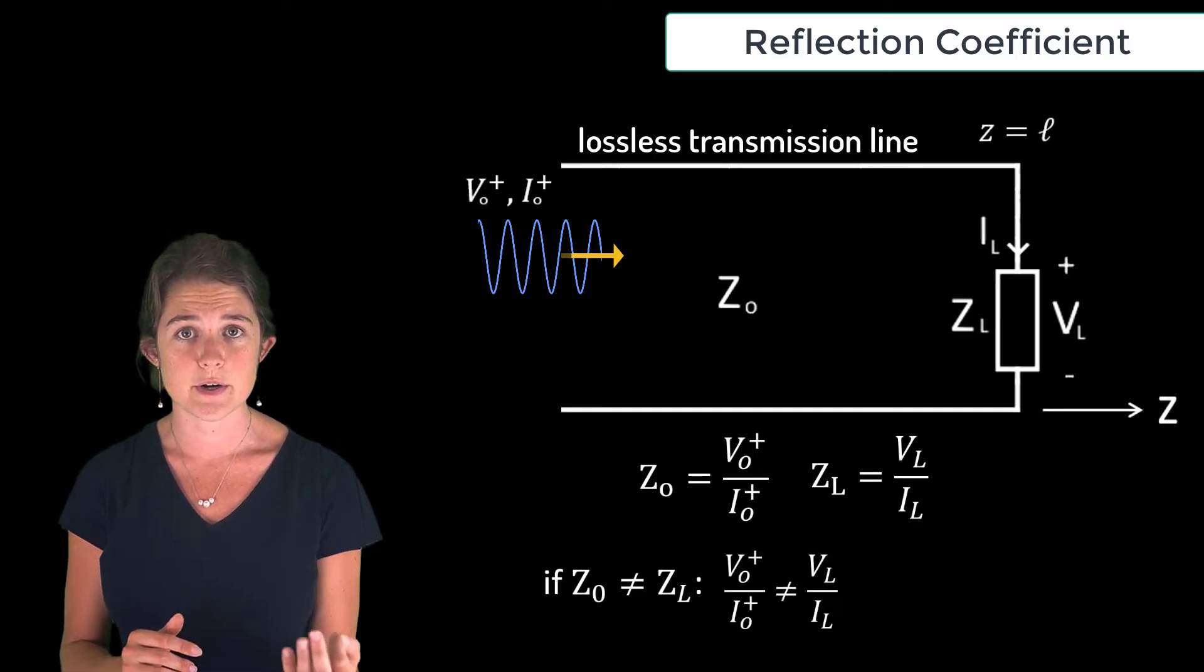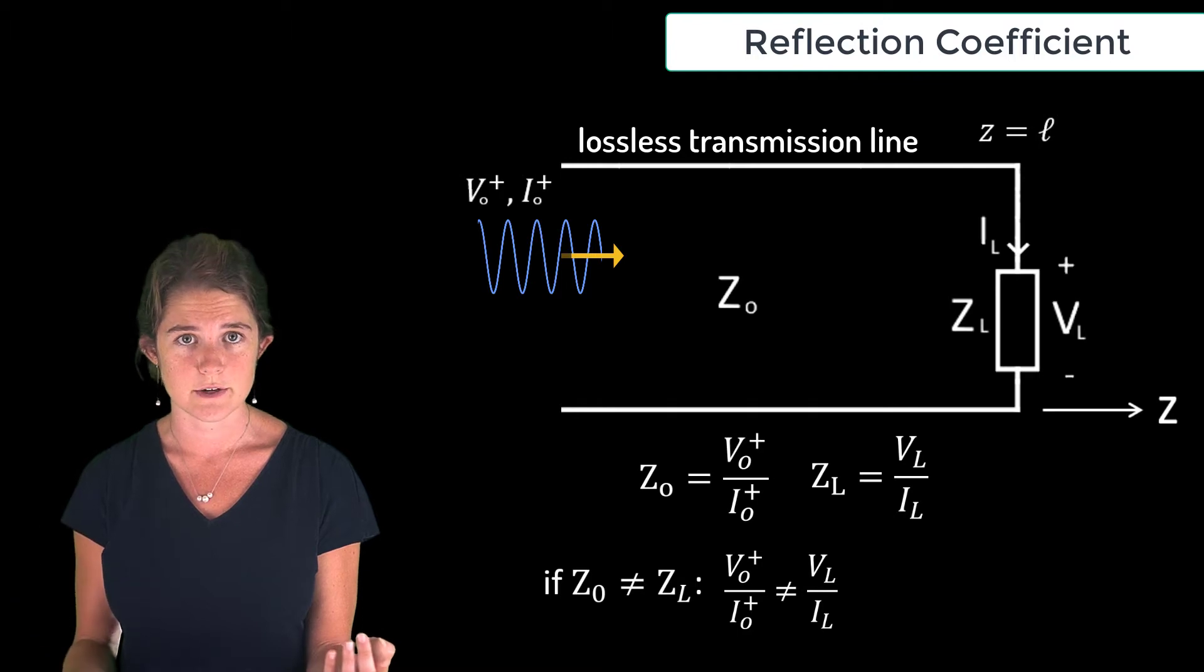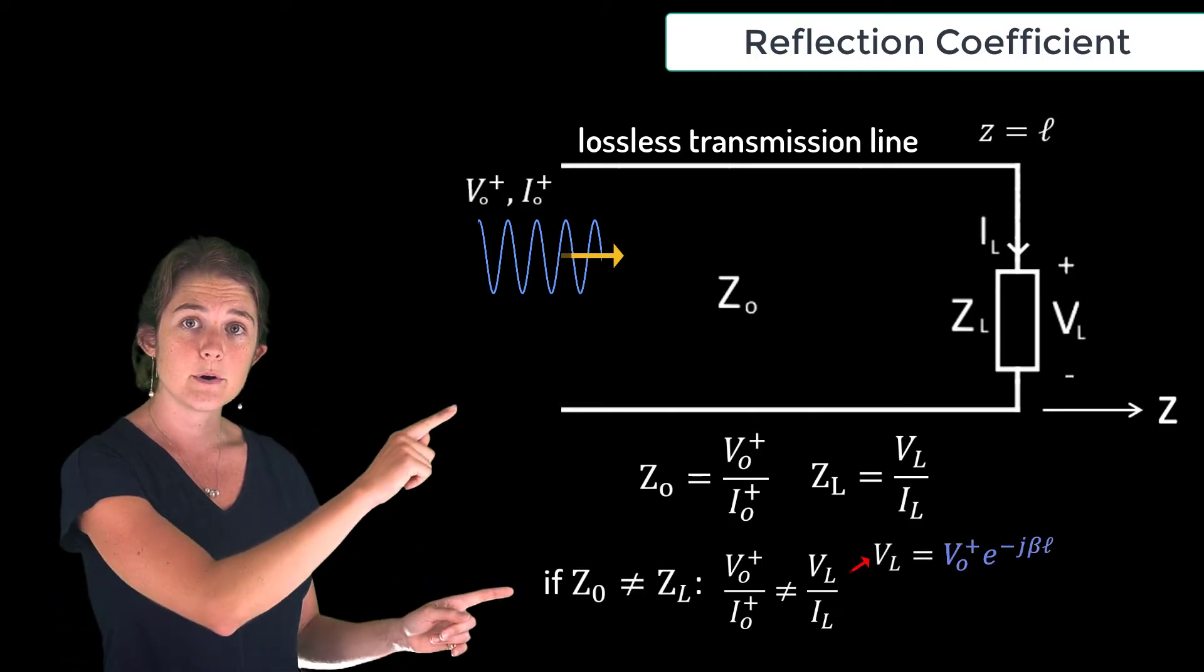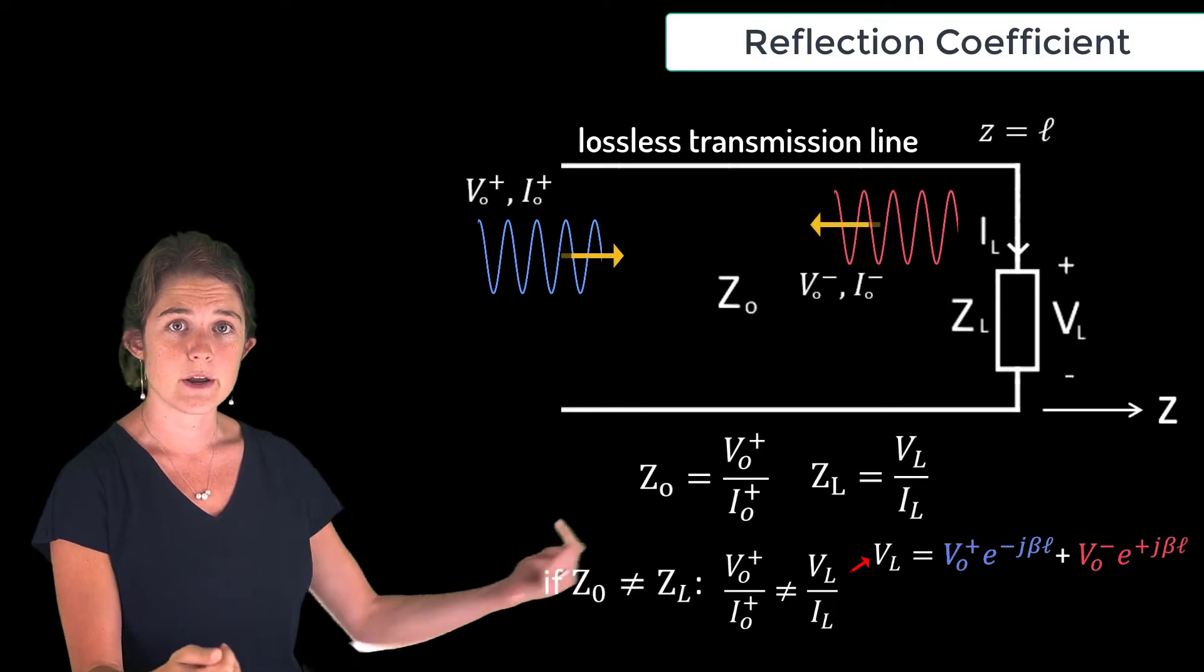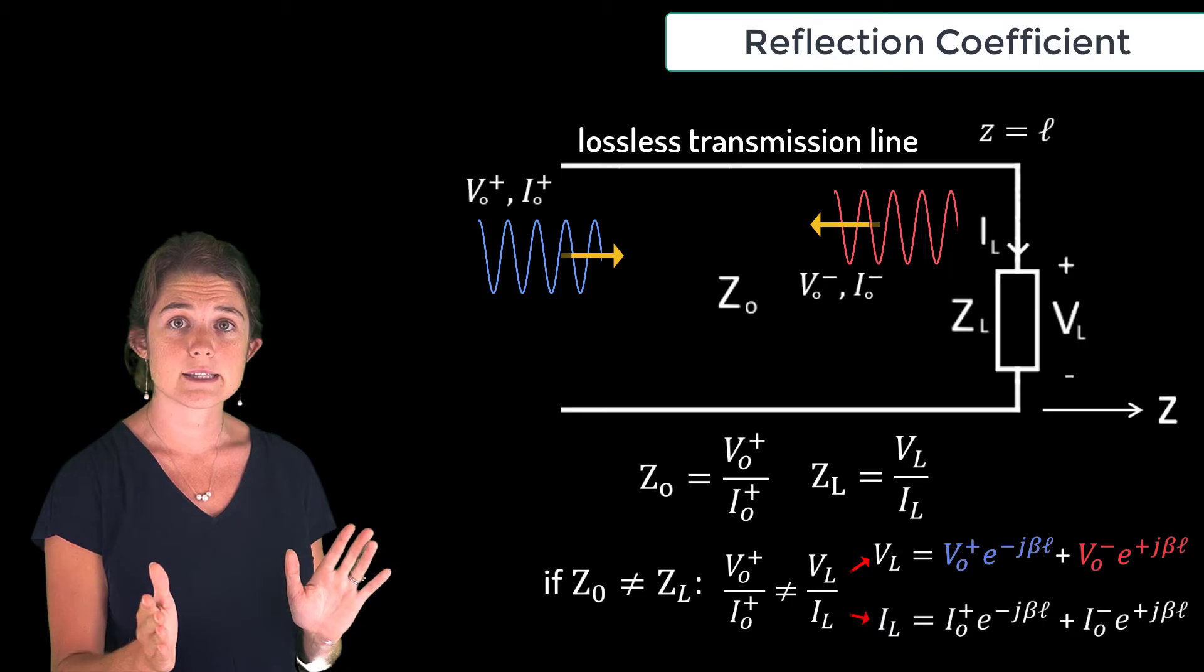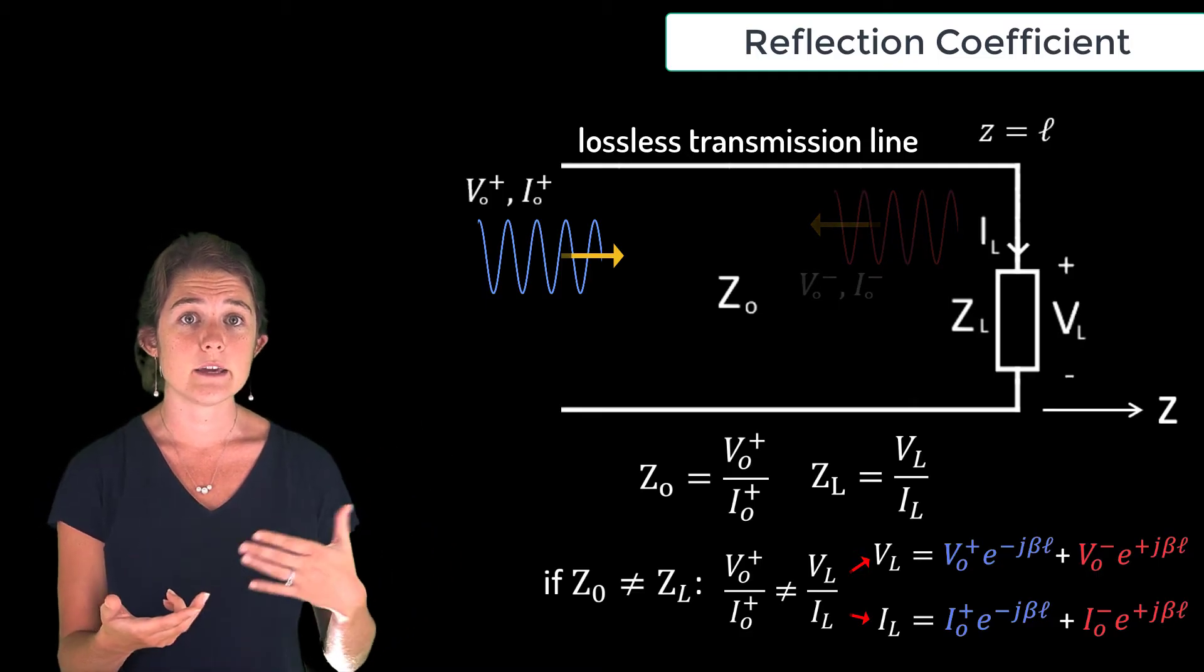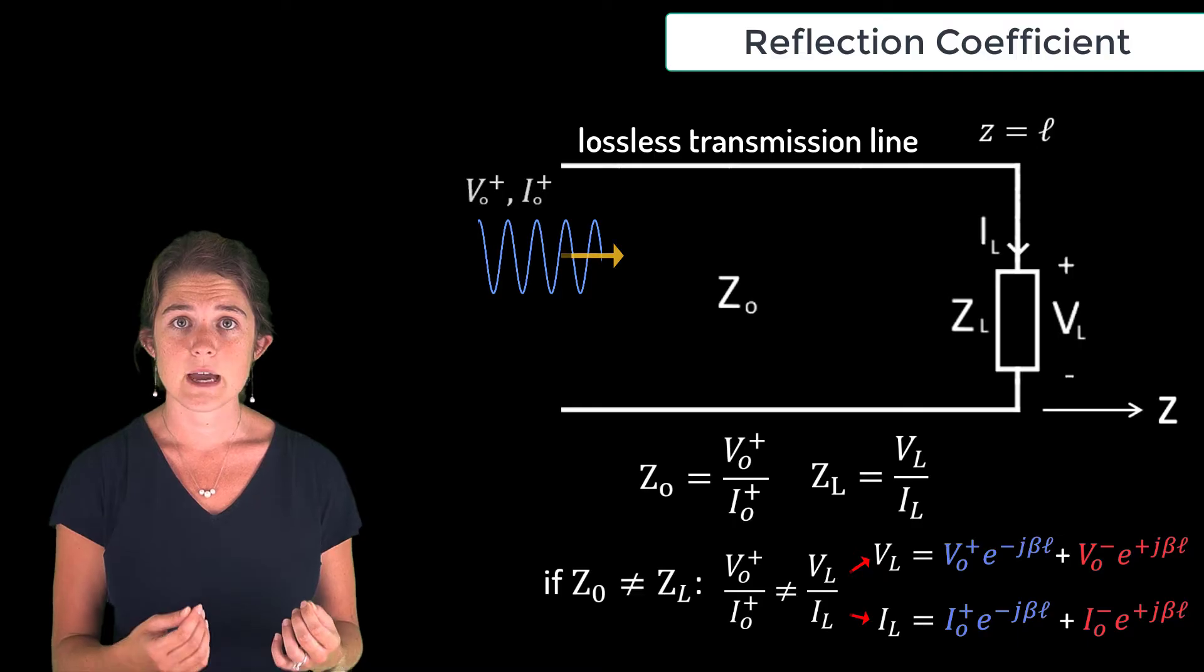However, if z0 and zL are not equal, then the ratio of forward voltage to forward current is not equal to the ratio of total voltage to total current. How do we make sense of that? Remember, the total voltage consists of both our input wave v0 plus and a possible backward wave v0 minus. Similarly, the total current consists of both the input wave i0 plus and a possible backward wave. If z0 is not equal to zL, the load is not matched to the line, and this mismatch will result in a reflection at the load.